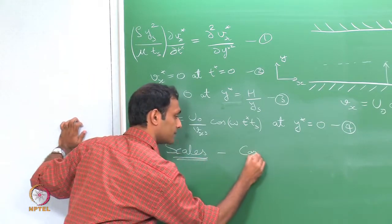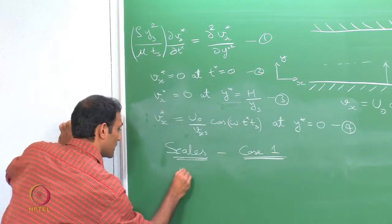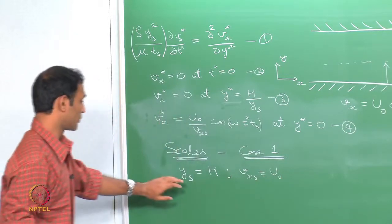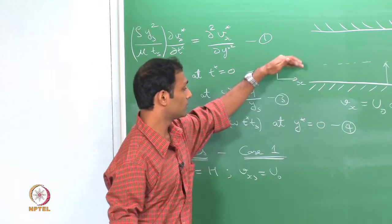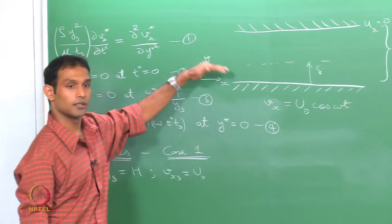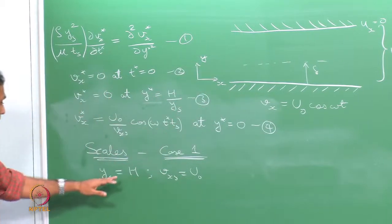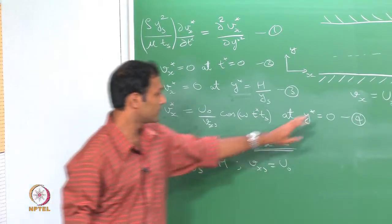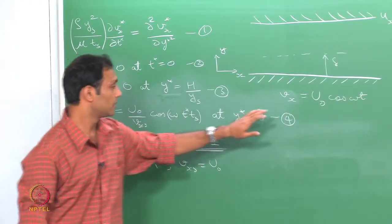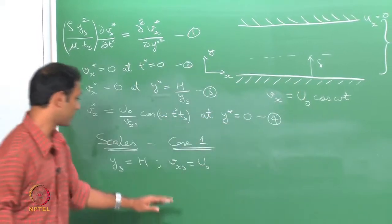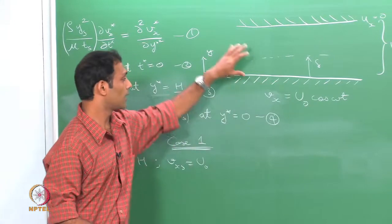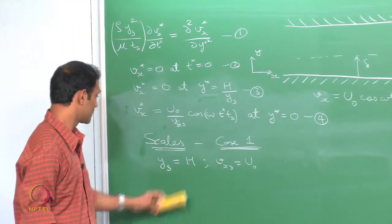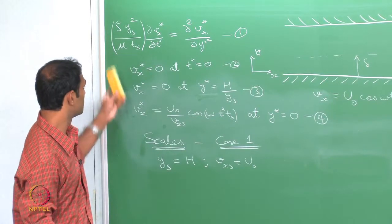In case 1, I am choosing my y scale to be h and my velocity scale to be u0. This means the velocity varies from y = 0 to h, so the motion is being driven by the wall throughout the domain. I have retained both physics: the velocity of the wall is important, and the flow will be affected throughout the entire domain.